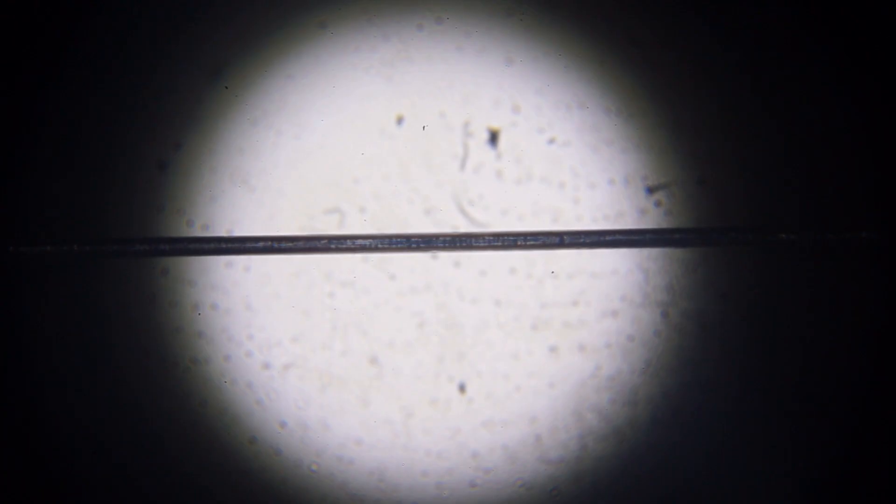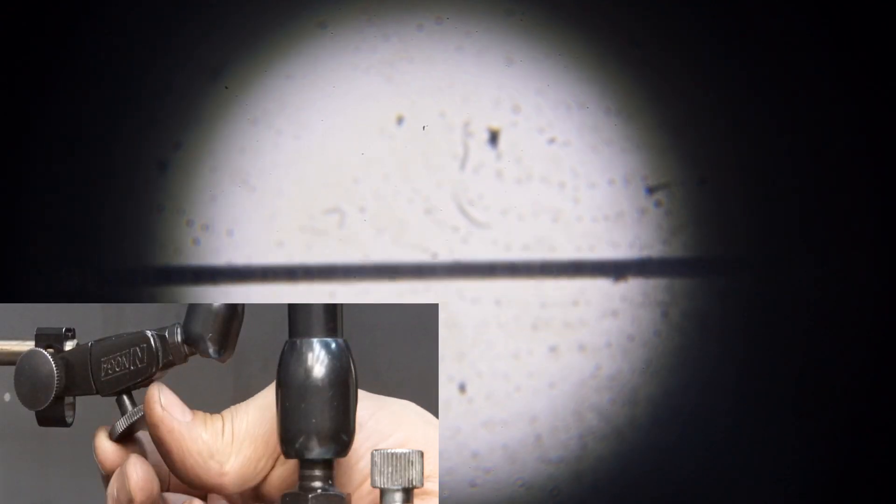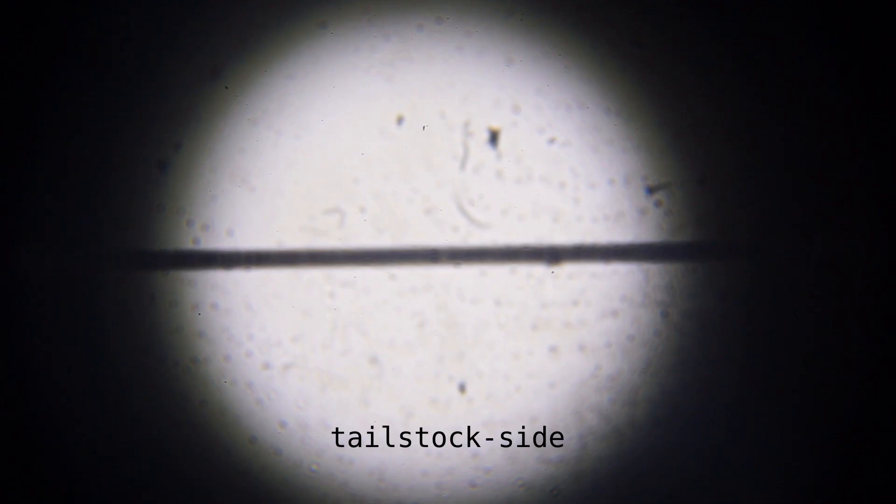On the headstock side, I centered the wire with the fine adjustment and focused the microscope. On the tailstock side, I adjusted the measuring wire using only the adjustments on the stand without correcting the focus on the microscope.